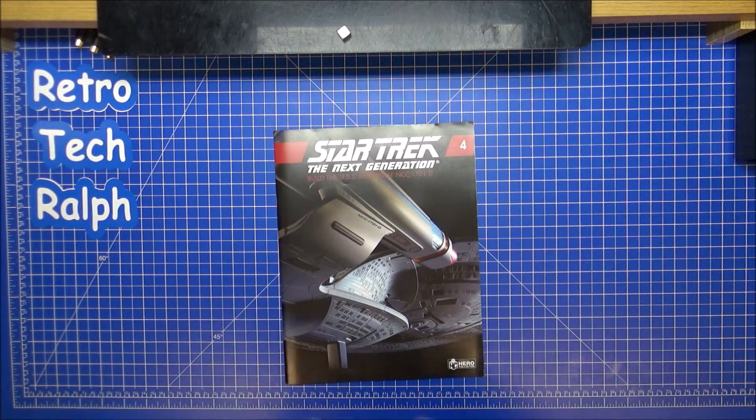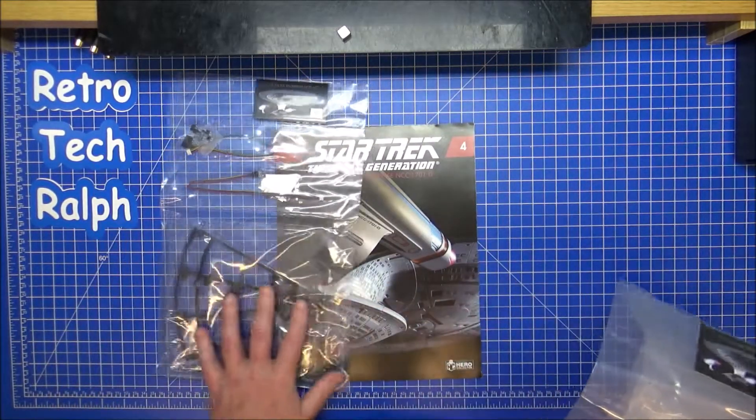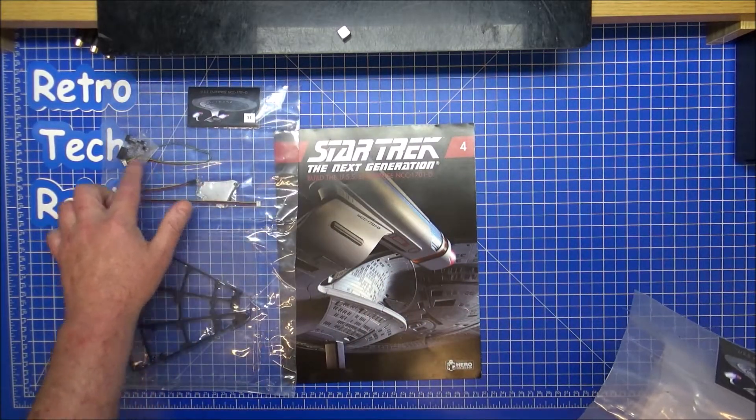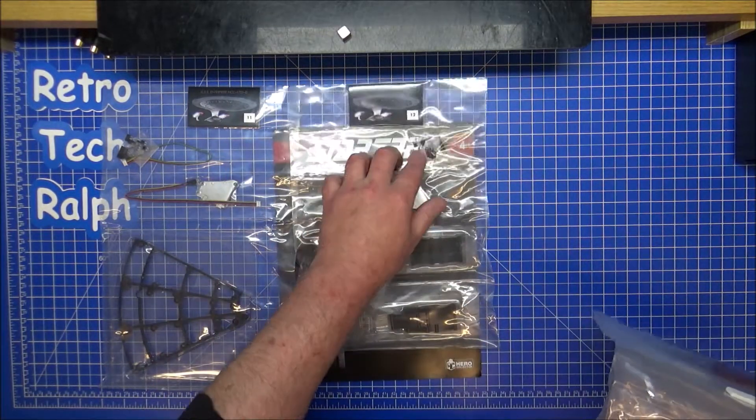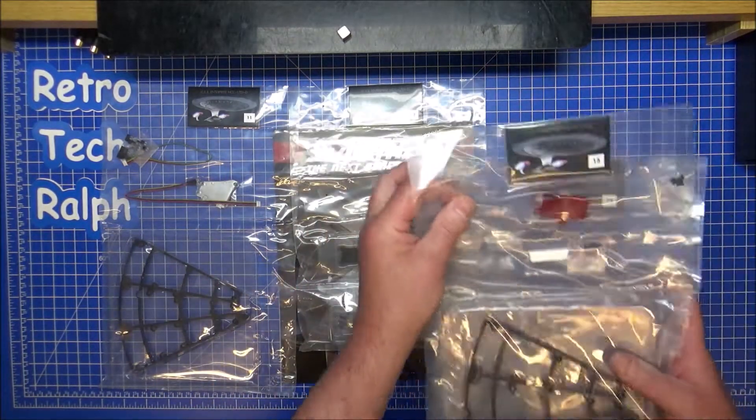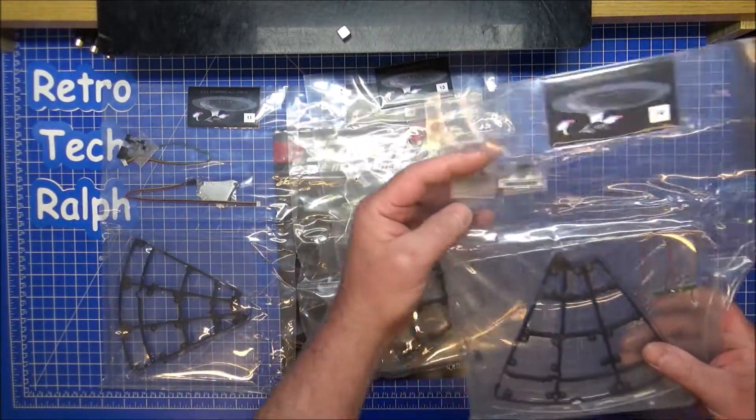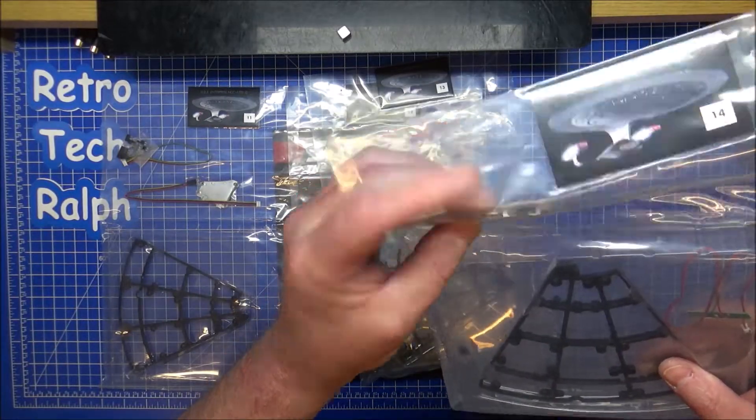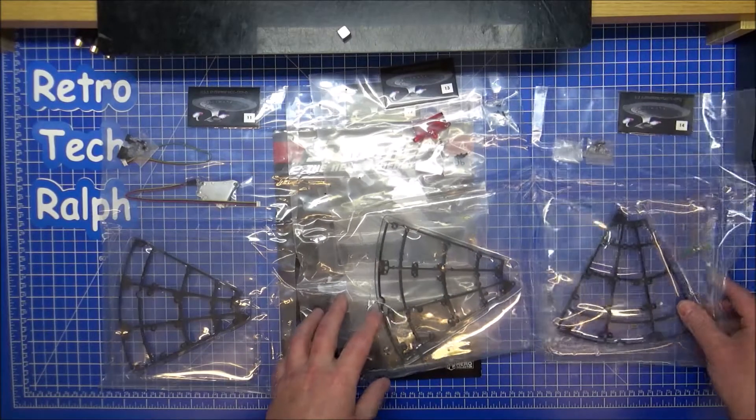We've got some freebies which is a mug I've already showed you, and we have part 11, structure and some lighting, 12, more supports and some windows, 13, more structure and a big red piece, and 14 more structure and some more lights.